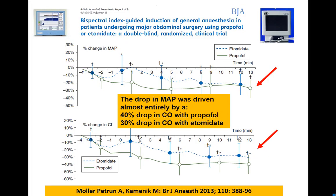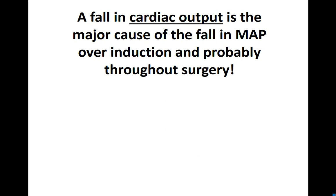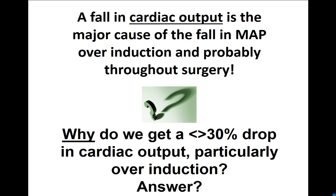We saw in the first part of the lecture that drop in mean arterial pressure driven almost entirely by a fall in cardiac output with either propofol or etomidate. It continued when we started inhalational anaesthetics. Fall in cardiac output is the major cause of this fall in mean arterial pressure over induction and probably continuing throughout surgery. Why do we get a 30% drop in cardiac output, particularly over induction?